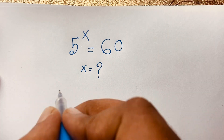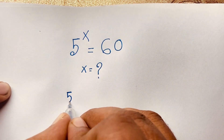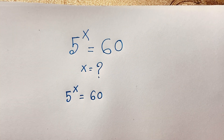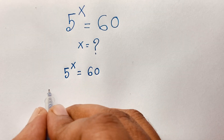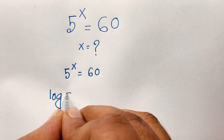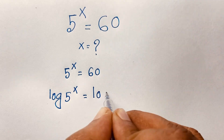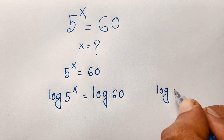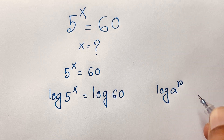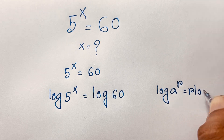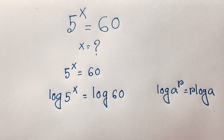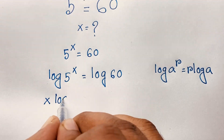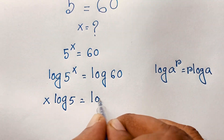So first of all, I take our question. It will be 5 to the power x is equal to 60. I use both sides natural log. So you can see this expression: log 5 to the power x is equal to log 60. One of the log rules says log a to the power r will be r times log a. According to this, I can see this expression — this x moves in front. So x log 5 is equal to log 60.